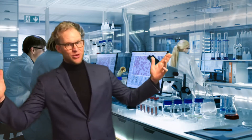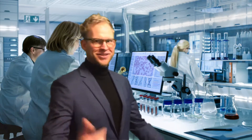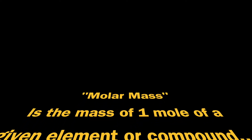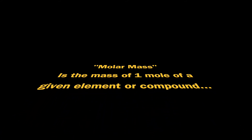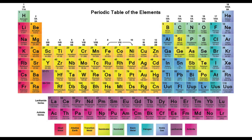So today we're going to be doing a little review on molar mass. So what is molar mass? Remember, molar mass is the mass of one mole of a given element or compound. So let's look at the periodic table of elements here. We see a bunch of elements, and under the element symbol we see the atomic mass. The atomic mass is the molar mass of an element.